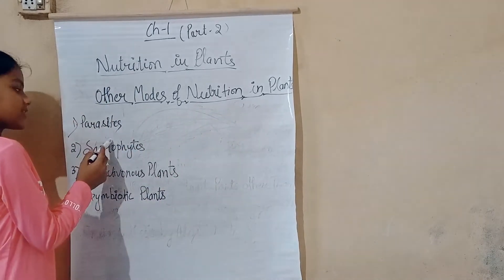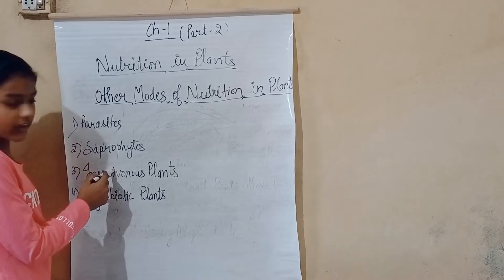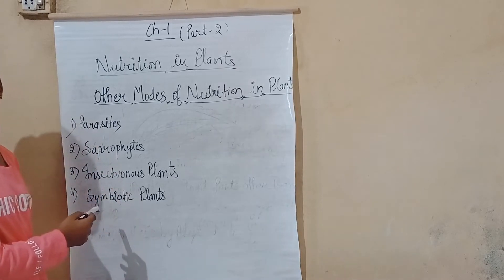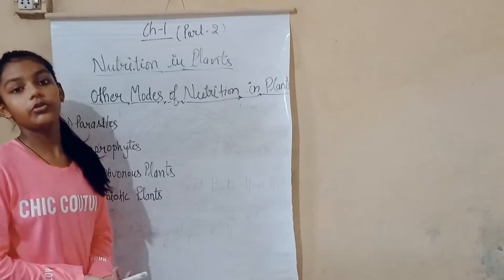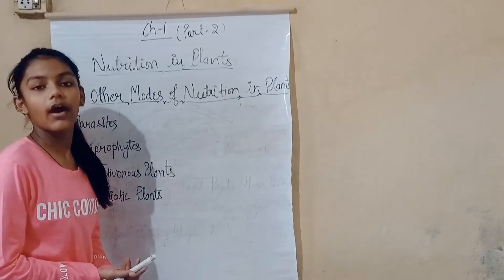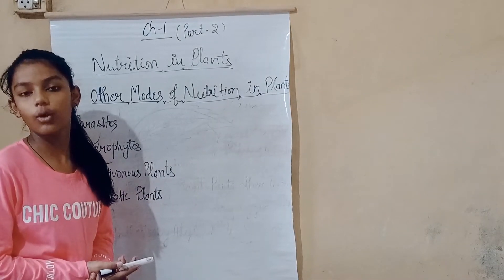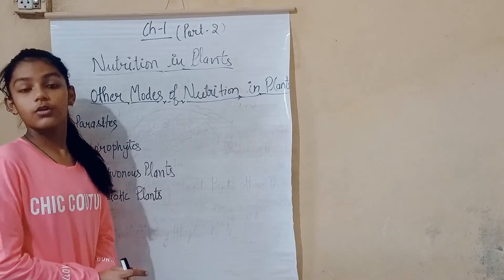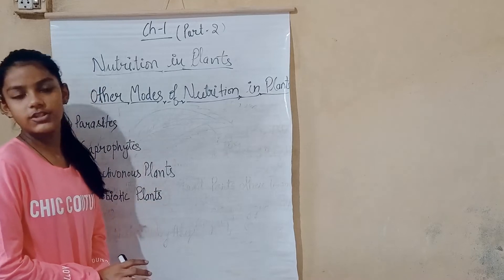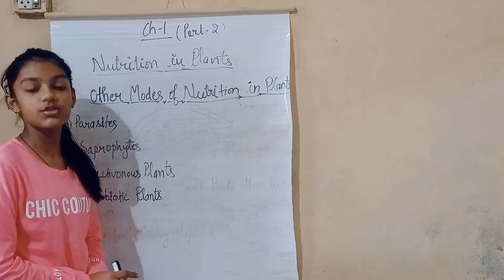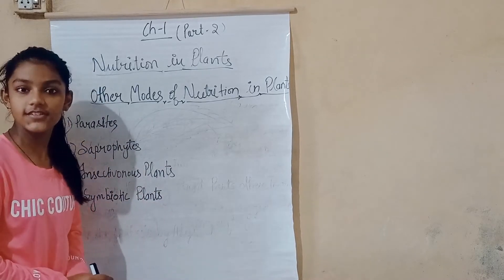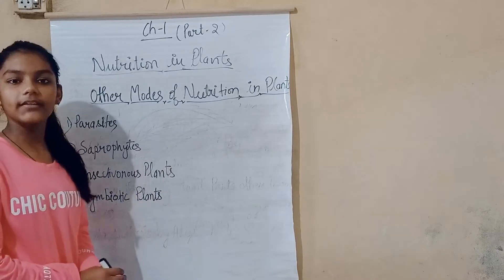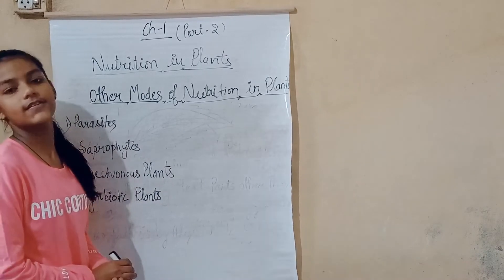The four modes are: first, parasites; second, saprophytes; third, insectivorous plants; and fourth, symbiotic. First, let's recap our previous topic — autotrophs and heterotrophs. Autotrophs are those plants which can make their own food by the process of photosynthesis, whereas heterotrophs are those plants which cannot make their own food by the process of photosynthesis.